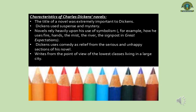Third, Dickens' novels rely heavily upon his use of symbolism. For example, you see symbolism in how he uses fire, hands, the mist, the river, and the signpost in Great Expectations. You see these symbols in different parts of the novel and can easily understand why he used them. Fourth, Dickens used comedy as a relief from the serious and unhappy sections of his novel.